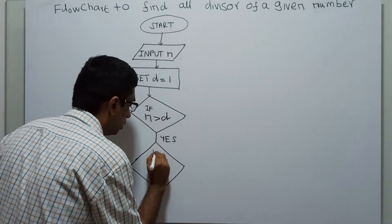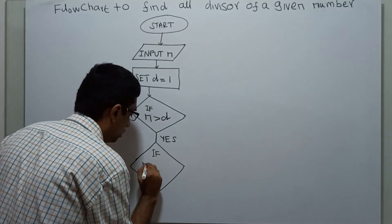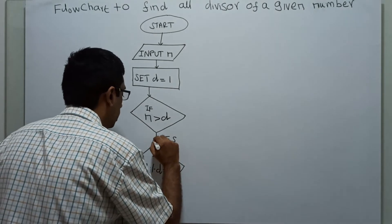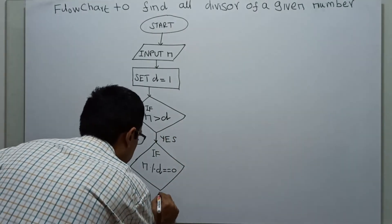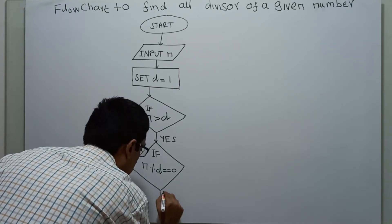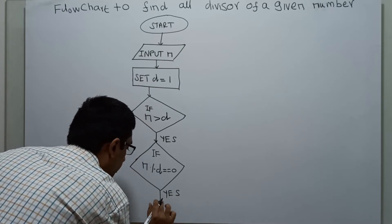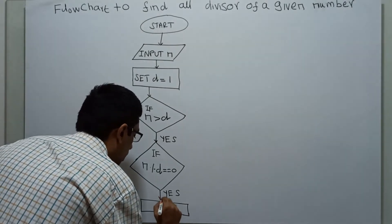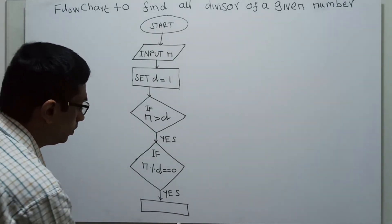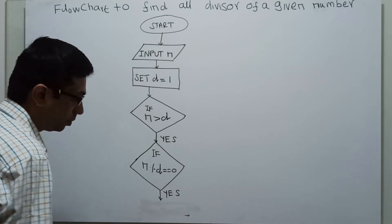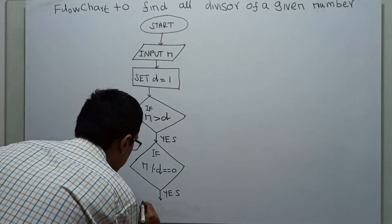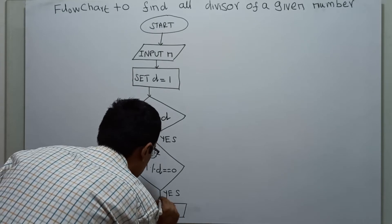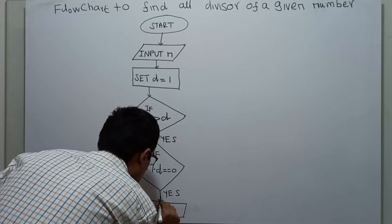Again, I am checking if n modulo d equal to 0. I am checking n modulo d equal to 0. If it is yes, I am printing d. I am printing the value of d.